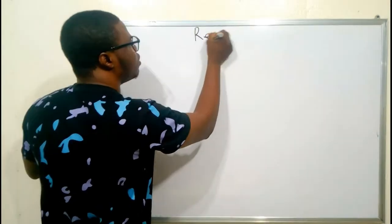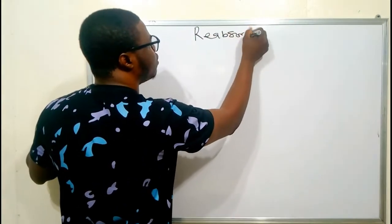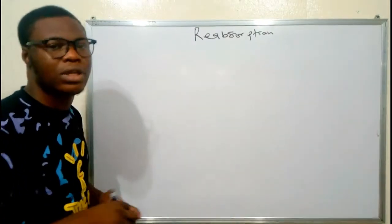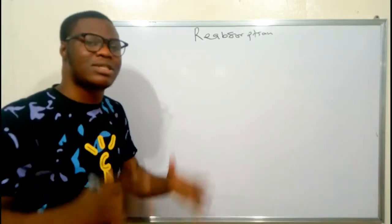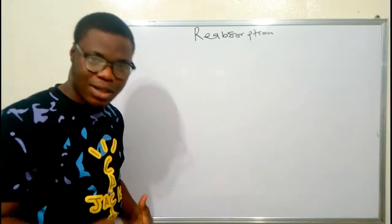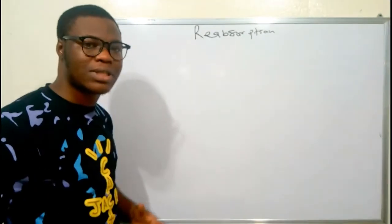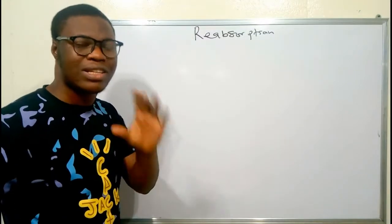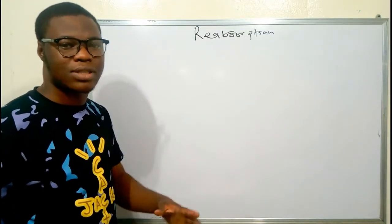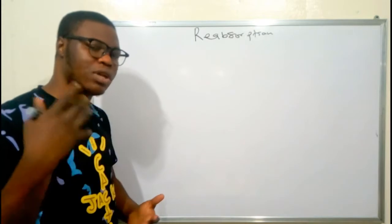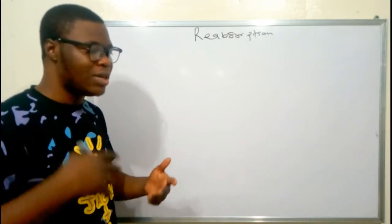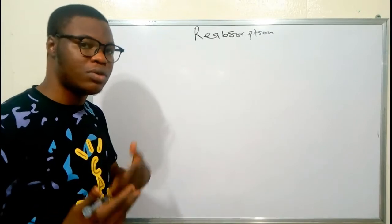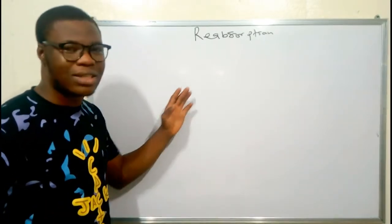The second stage is reabsorption. A simple definition: reabsorption is a process by which the filtrate is altered during its passage through the renal tubule. The nephron has two parts: the renal corpuscle, which is mainly for filtration, and the renal tubule, which is mainly for reabsorption.